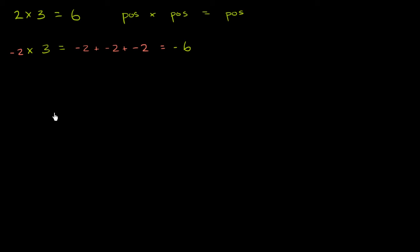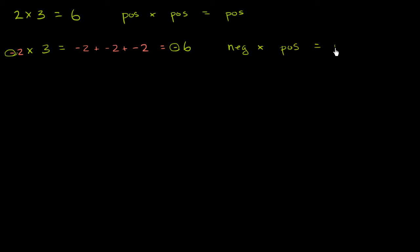Another way to think about it is: if I had 2 times 3, I would get 6. But because one of these two numbers is negative, then my product is going to be negative. So if I multiply a negative times a positive, I am going to get a negative.